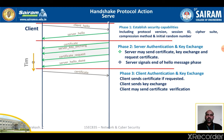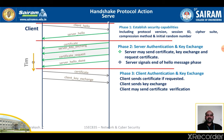If no suitable certificate is available, the client sends a no certificate alert instead. Next is the client key exchange message, which must be sent in this phase. The content of the message depends on the type of key exchange. For RSA, the client generates a 48-byte pre-master secret and encrypts it with the public key from the server certificate or a temporary RSA key from a server key exchange message. For ephemeral or anonymous Diffie-Hellman, the client's public Diffie-Hellman parameters are sent.